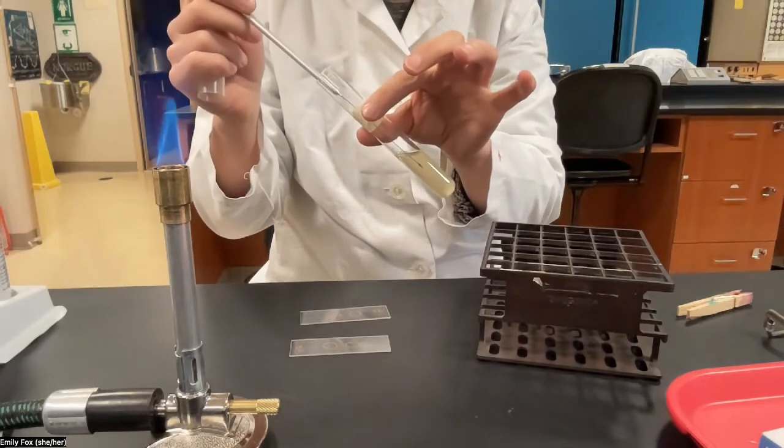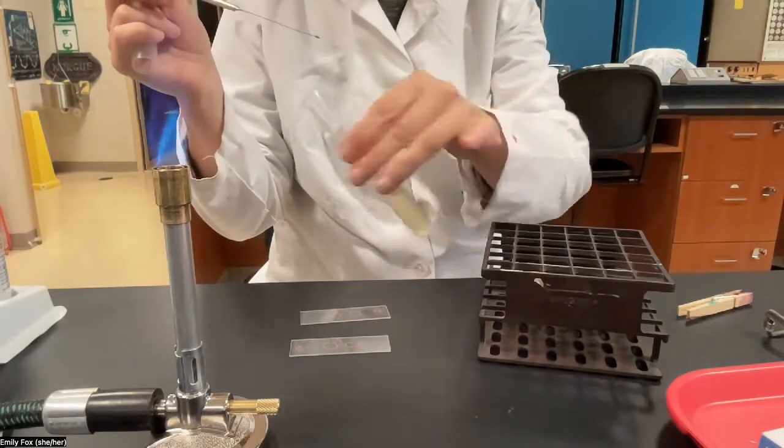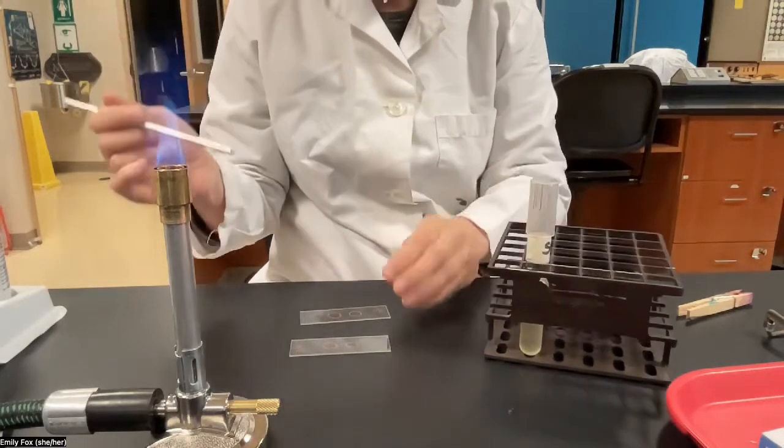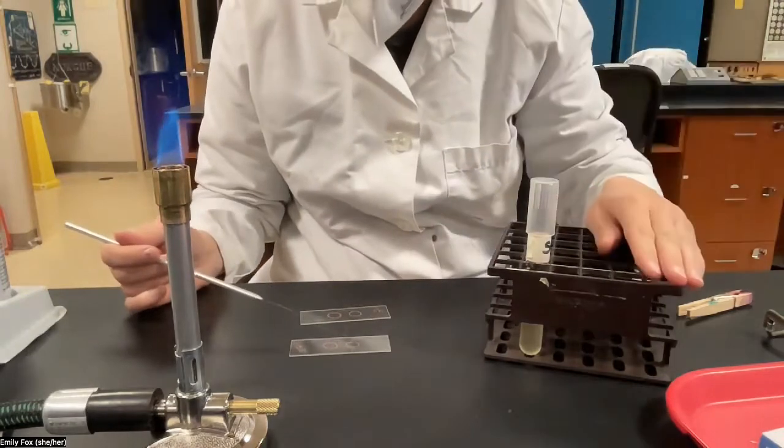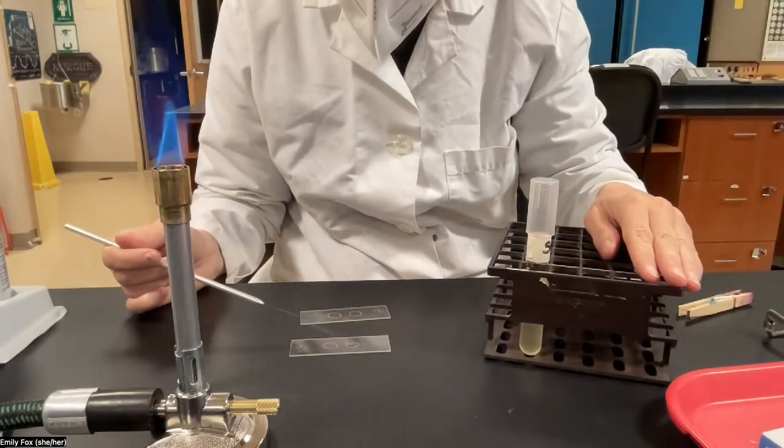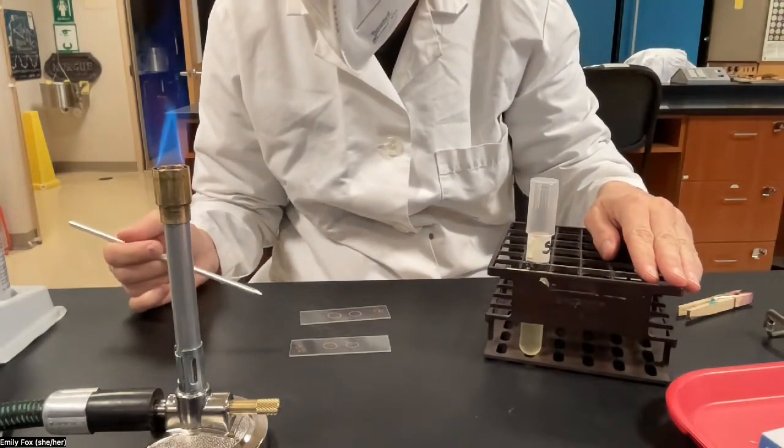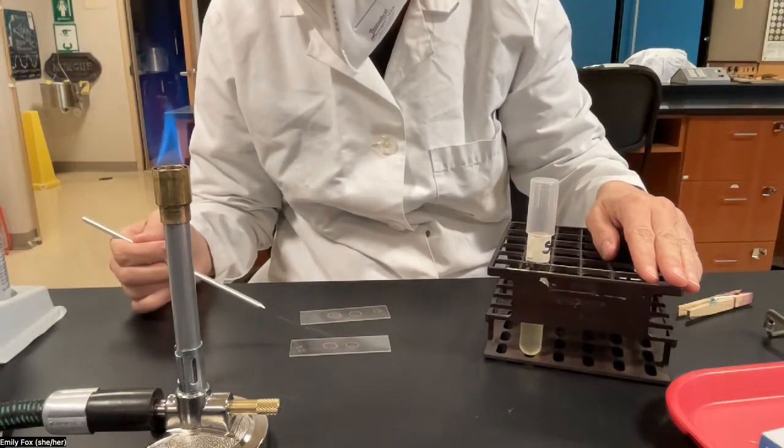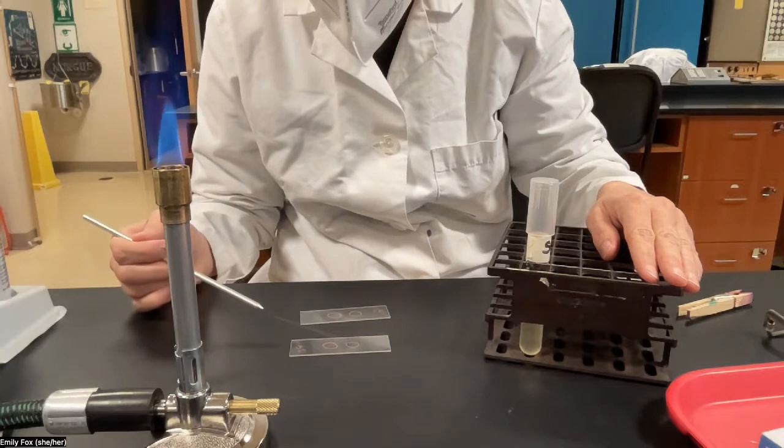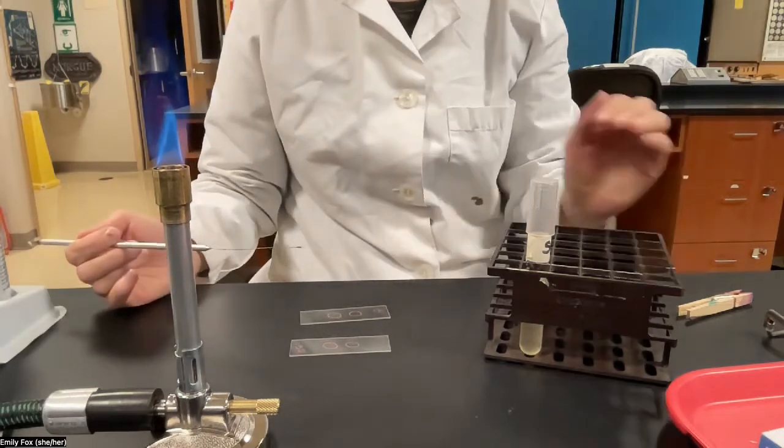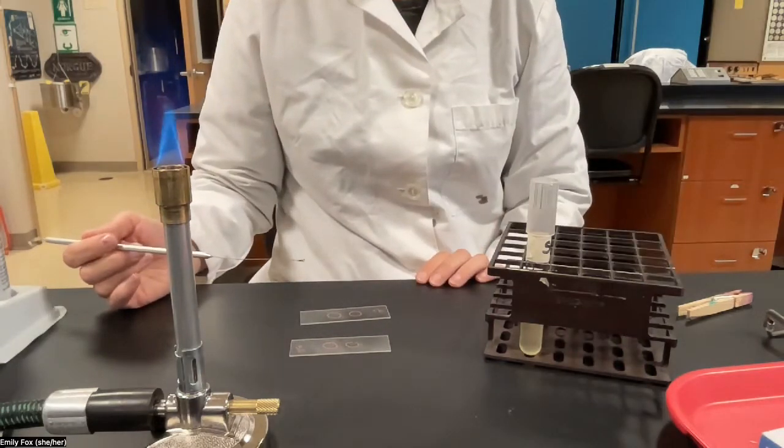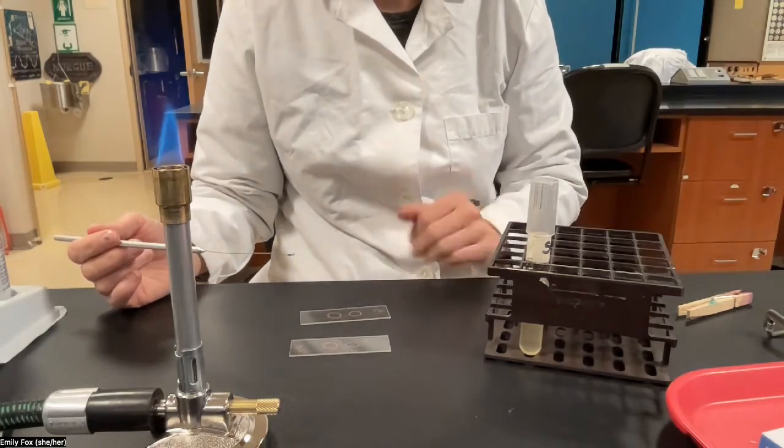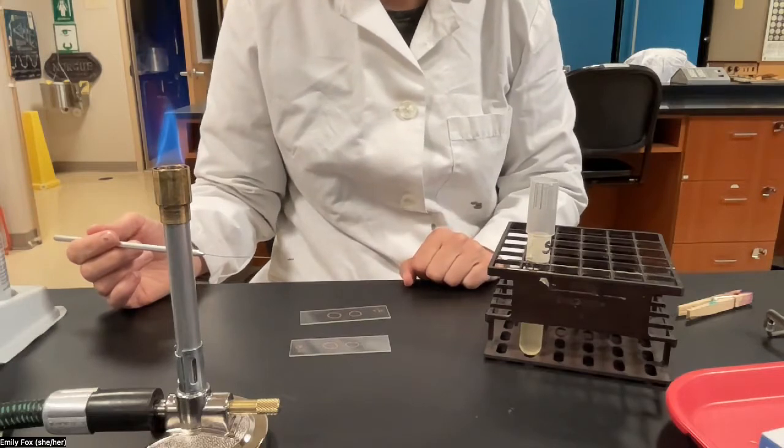Once your loop is cool, you can reach in and get a loop full of bacteria. Put your tube down and you're ready to add that bacteria to one of your circles. And you're just going to smear it around, filling in the circle. The purpose of the circle is to let you know where you put your bacteria when you're ready to look at them on the microscope. Now you have a nice circle to aim for with your objective lens.